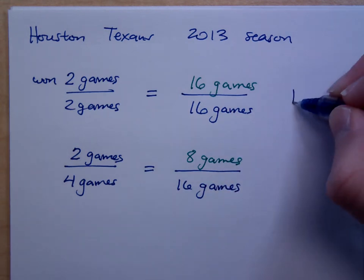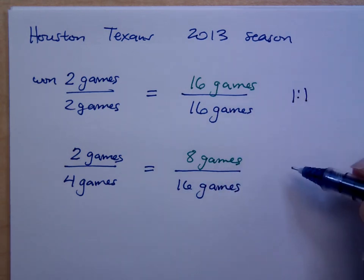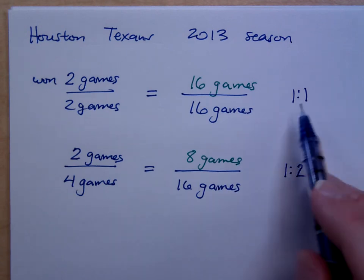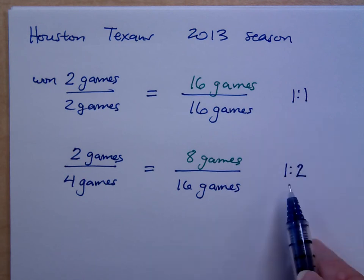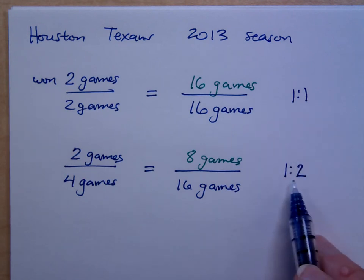So, the ratio at the very beginning was a one-to-one ratio. What's the ratio here? One to two. So, what does that mean? At the beginning, they won one out of one games. Now, it looks like they're only winning one out of every two games, right?